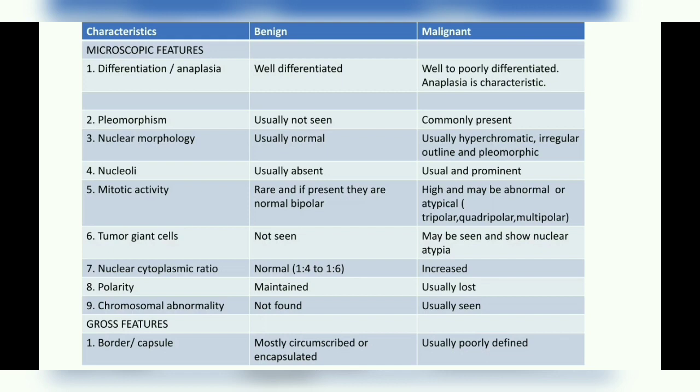The very first microscopic feature is differentiation. In a benign tumor, it is usually well differentiated, meaning the new cells formed resemble the cell of origin. Whereas in a malignant tumor, they can have a range of differentiation — well differentiated, moderately differentiated, or poorly differentiated — so there is actually a grading system in a malignant tumor.